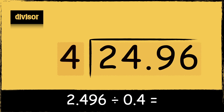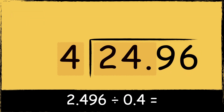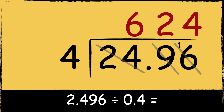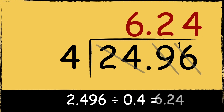Now we can find out how many times the divisor fits into these numbers. Four goes into 24 six times. Four goes into nine twice with one left over. Four goes into 16 four times. The dividend has two digits after the decimal point, so we need to make sure that the answer also has two digits after the decimal point. So the answer is 6.24.